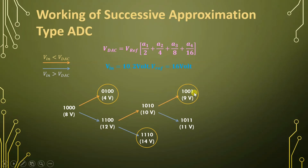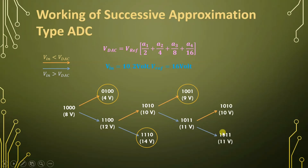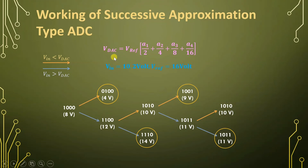In the fourth clock we compare the last data bit. There are two possibilities: if VIN is less than VDAC, that bit will be 0; if VIN is greater than VDAC, the bit stays 1. Here VDAC = 11 V and VIN = 10.2 V, so VDAC is greater than VIN — this condition is false. Therefore, our translated digital output data is 1010, with VDAC equivalent voltage of 10 V. After four clocks we have our digital data. The resolution of this successive approximation type ADC is 4 bits, so it needs four clocks to produce digital output data.